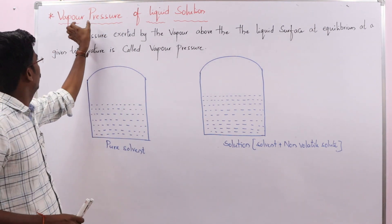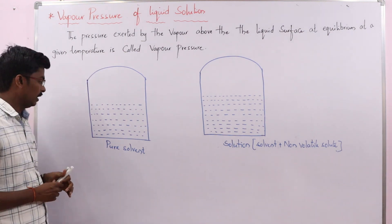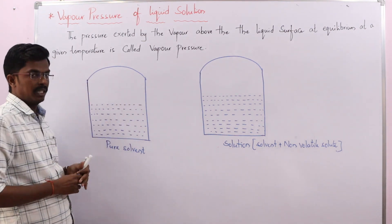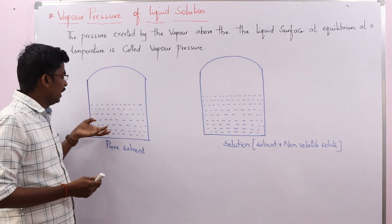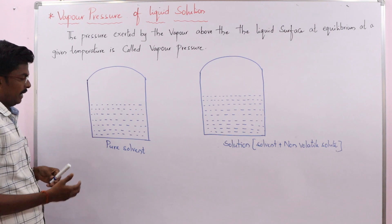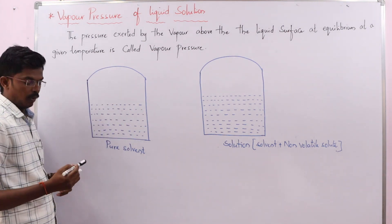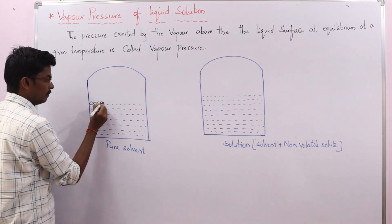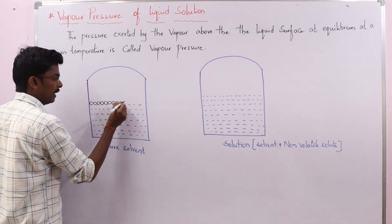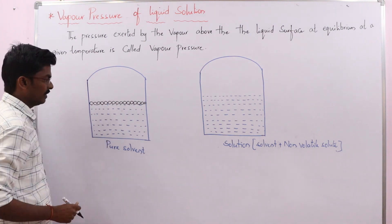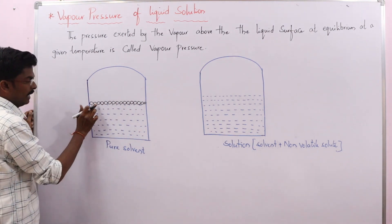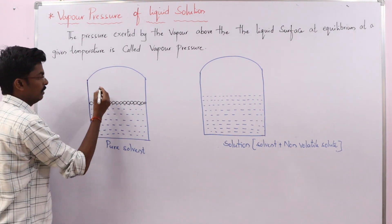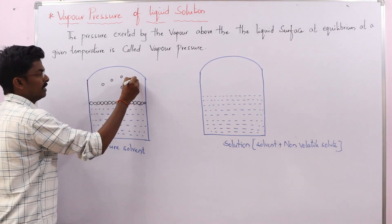To easily understand vapour pressure, just look here. I am taking one liquid solution in a beaker and closing it with a jar. Generally, a volatile liquid can easily evaporate. So I am taking that volatile solvent here. The liquid surface area is containing all the volatile solvent particles, which are ready to escape from the liquid solution and occupy the empty space in the jar.